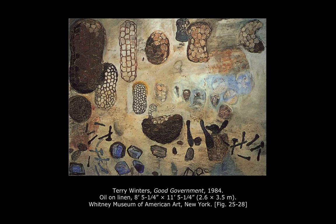Winters spent three months working on this painting, which he began without a clear title in mind. He said that he, quote, thought it looked like one of those maps you saw in grammar school, and it said, good government, and everything was working together.